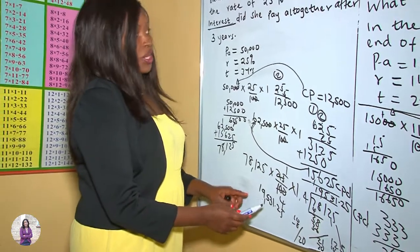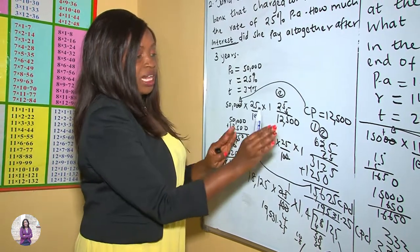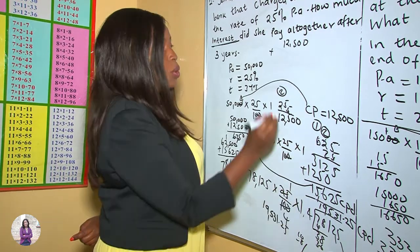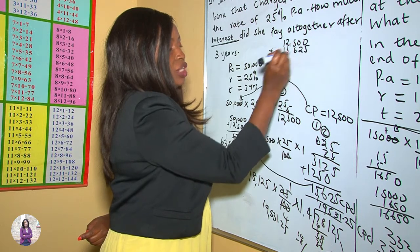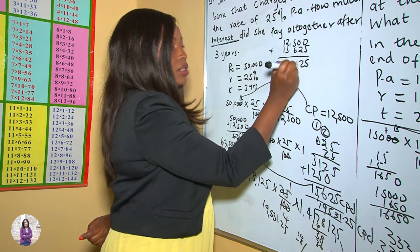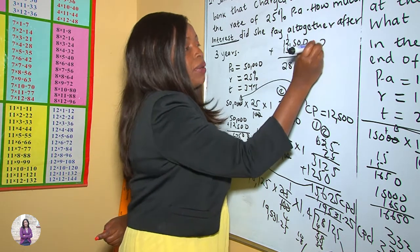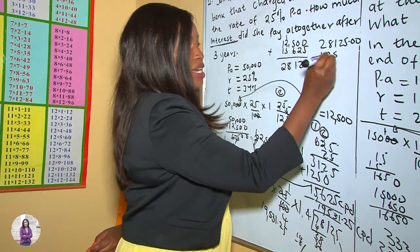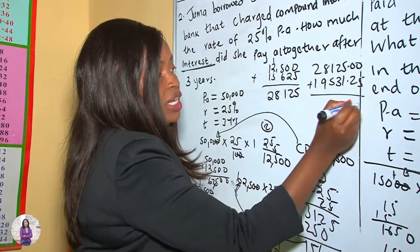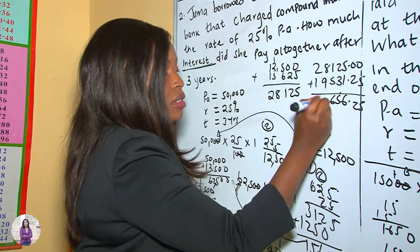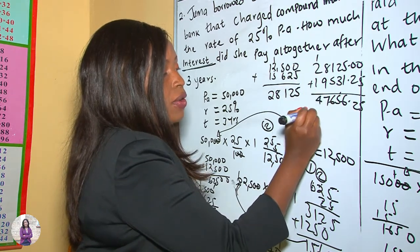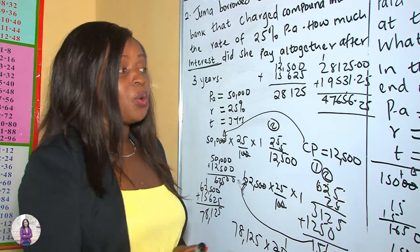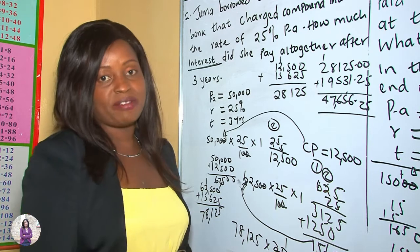The question asks how much total interest was paid. We add all three years of compound interest: $12,500 (year 1) + $15,625 (year 2) + $19,531.25 (year 3). The total compound interest paid over three years was $47,656.25.